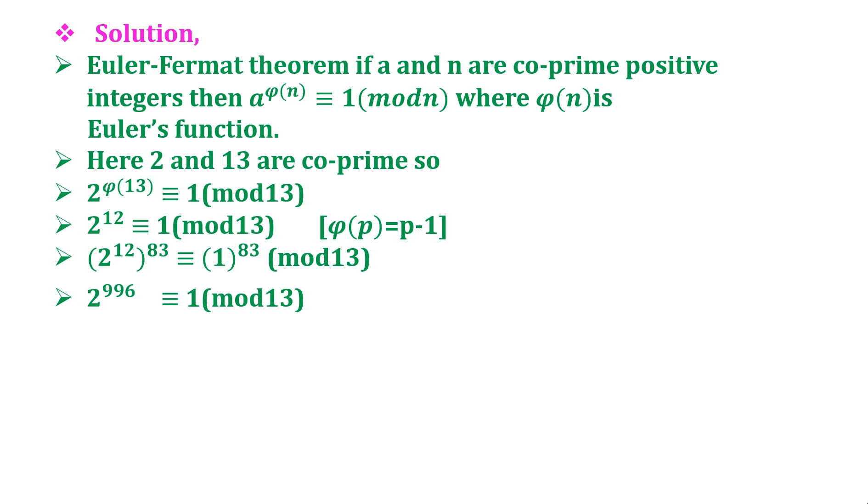But we want 2 raised to 1000. So, multiplying both sides by 2 raised to 4, which gives us 2 raised to 1000 is congruent to 16 mod 13, which implies 2 raised to 1000 is congruent to 3 mod 13.